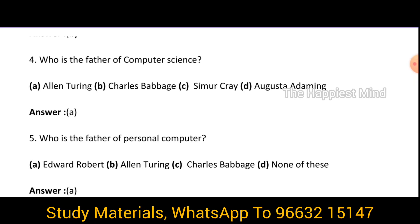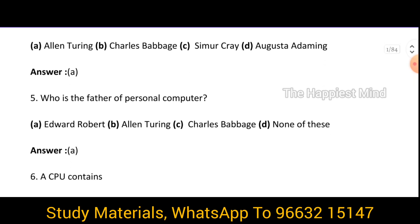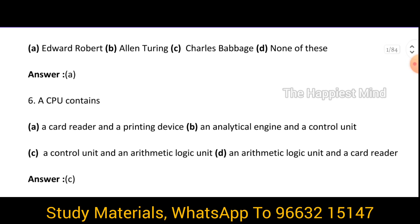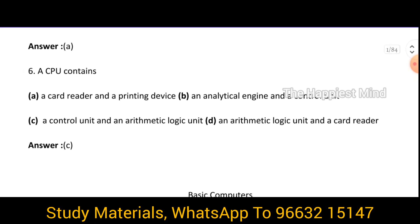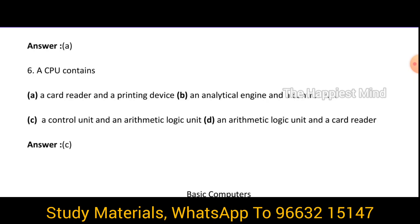Question 5: Who is the father of personal computer? It is option A — Edward Roberts. Question 6: A CPU contains dash. Answer is option C — a controlling unit and an arithmetic logic unit.